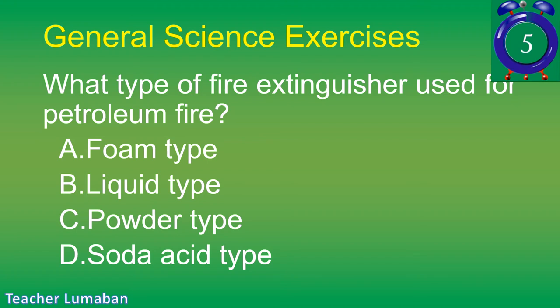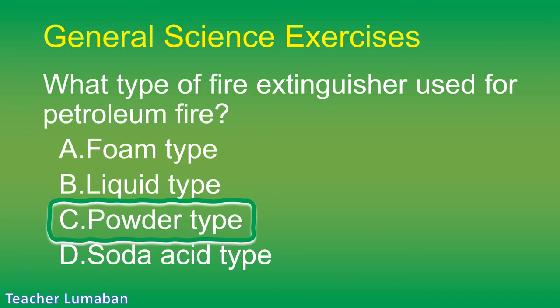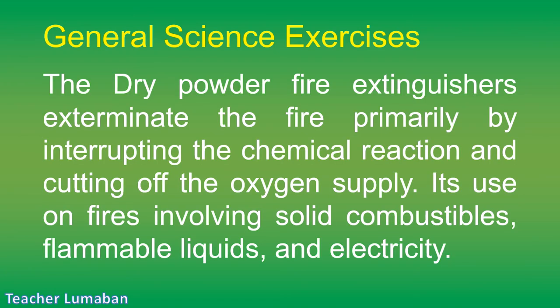The correct answer is Letter C: powder type. The dry powder fire extinguisher extinguishes the fire primarily by interrupting the chemical reaction and cutting off the oxygen supply. It is used on fires involving solid combustibles, flammable liquids, and electricity.